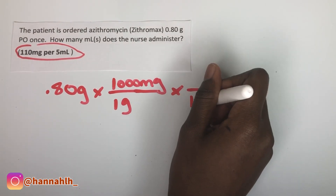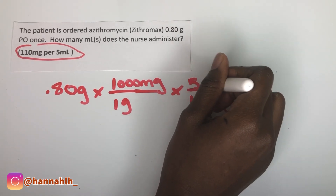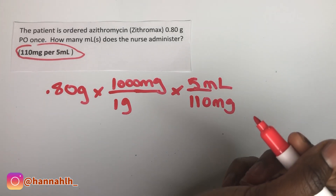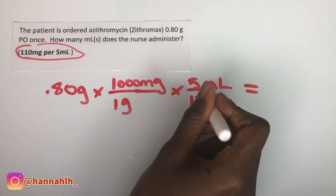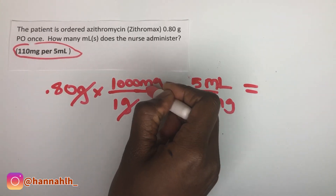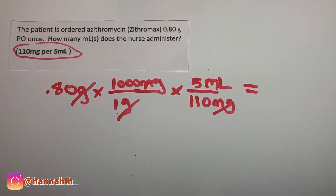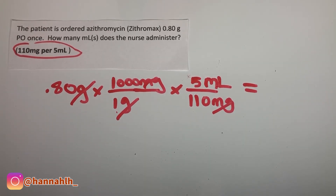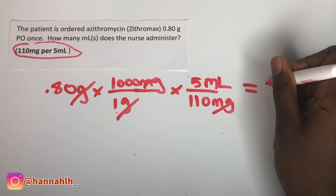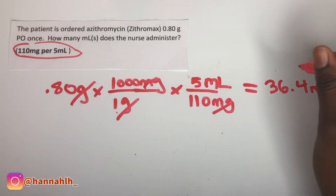110 milligrams are in every 5 milliliters, so that's equal to 5 milliliters. We want our answer to be in milliliters, so we multiply across: 0.80 times 1000 times 5, divided by 110. The answer should be 36.4 milliliters.